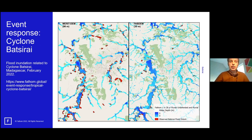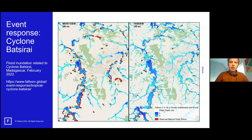For event response, here is Cyclone Batsirai in Madagascar. Blue depicts flood depth from the model and red shows satellite observations from the Copernicus Sentinel program. The left panel uses the MERIT DEM — a decent result — but the blue doesn't fully cover the red observations. The right panel using FAB DEM does an excellent job of matching the satellite observations, and also picks up many smaller channels in the headwaters.